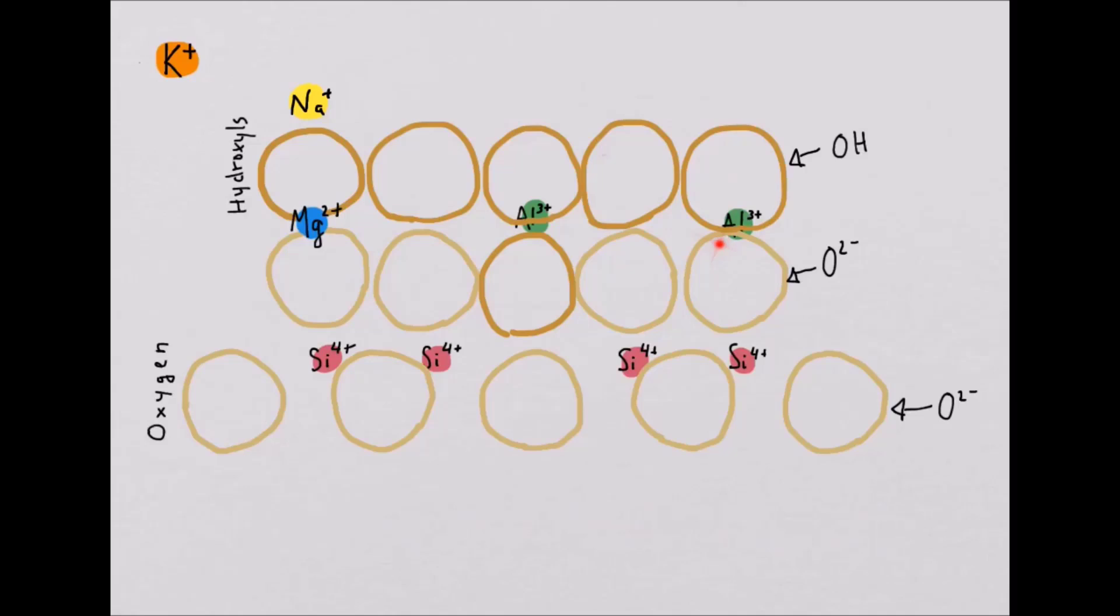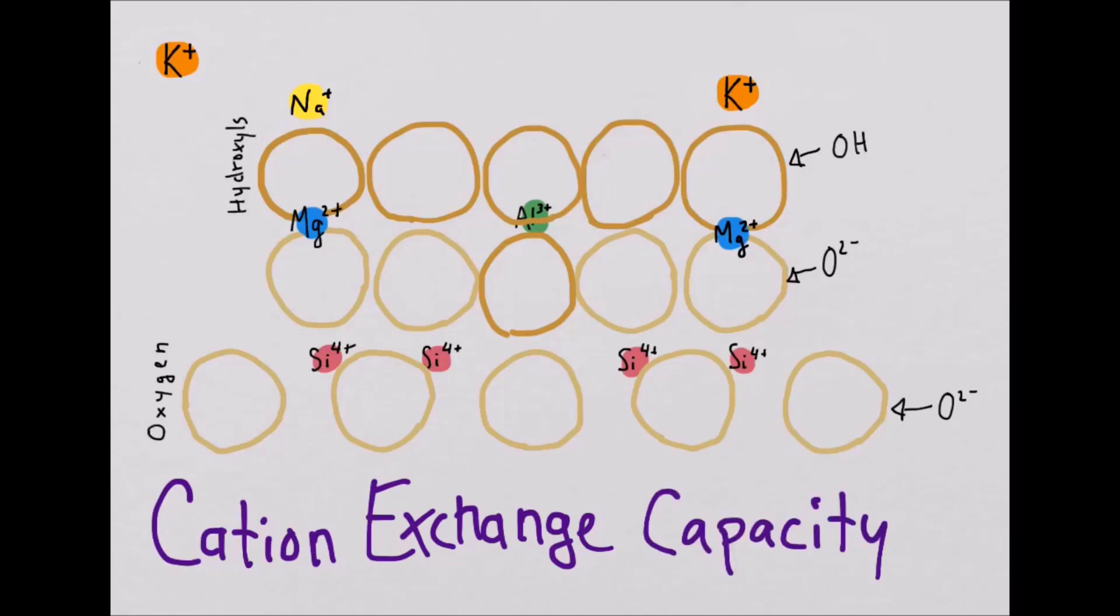Generally speaking, the more of this type of isomorphous substitution, the greater the negative charge on the clay, and the greater its capacity to exchange cations, which, appropriately, we call cation exchange capacity.